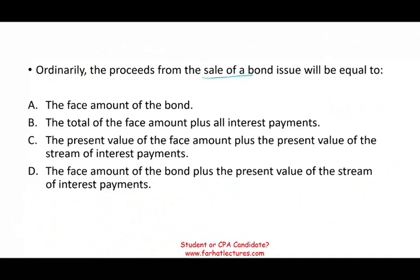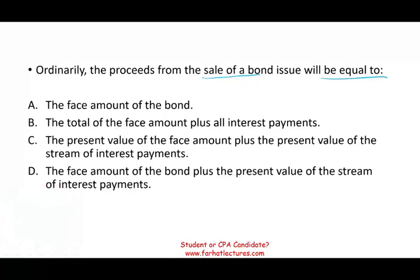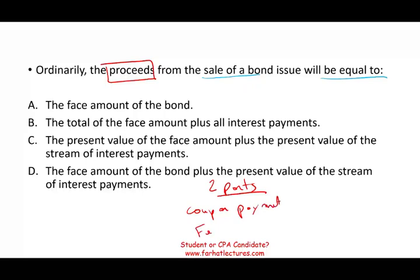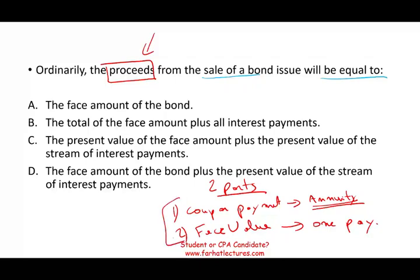Next: ordinarily, the proceeds from a sale of the bond will be equal to what? When the company issues a bond, how much do you get? You have to understand this basic concept: the bond is composed of two parts — coupon payments and the face value. When you buy a bond, you're going to get coupon payments and the face value. The coupon payments are an annuity — a series of payments — and the face value is one payment.